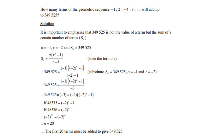How many terms of the geometric sequence -1, 2, -4, 8, ... will add up to -349 525? The common ratio is -2. Set Sₙ = -349 525 with a = -1 and r = -2. Use the formula and simplify with a calculator, then cross-multiply. You can use logs or exponential laws: 1 048 576 = 2²⁰, so both bases are equal, therefore n = 20.